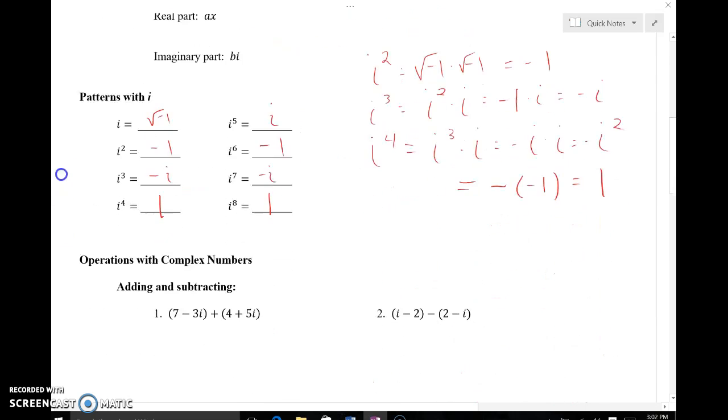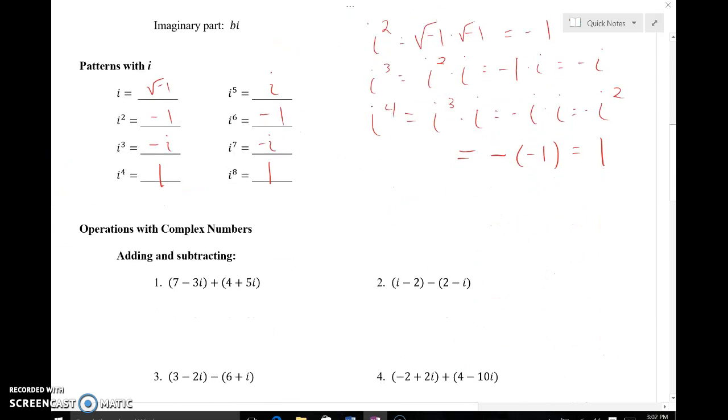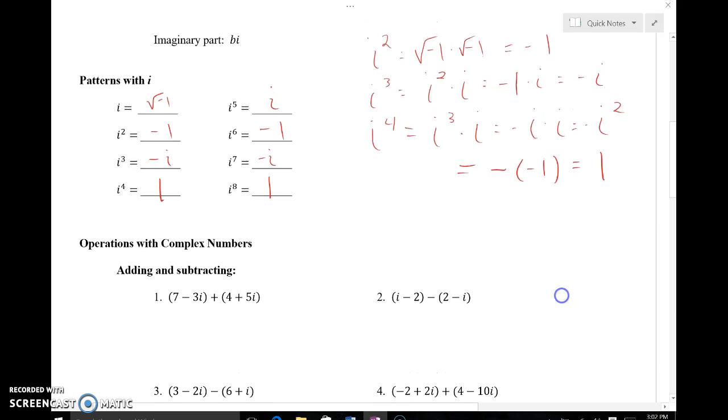Alright we're going to take a note of some patterns here. I've already got this filled in so again if you want to pause your computer screen and write that in that's just fine but what I've got worked out over here to the right is basically the proof for where this pattern came from. So over here I've written out why i squared ends up being negative 1. When you multiply the square root of negative 1 times the square root of negative 1, the square root of negative 1 times the square root of negative 1, it ends up being negative 1 as the two radicals cancel each other out.